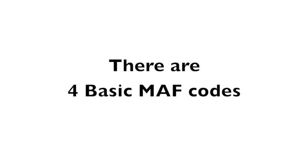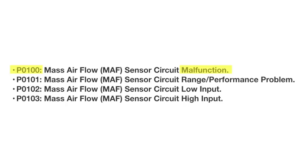There are four basic mass air flow codes. The first code is P0100, a circuit malfunction problem. This is a generalized code — it knows there's a problem but it can't differentiate between the other possibilities, so it sets the general code.